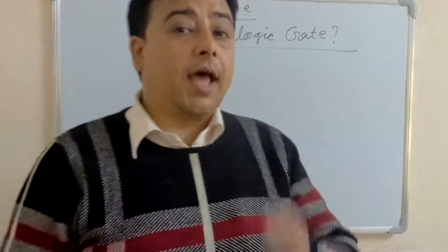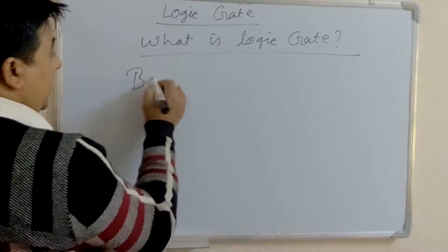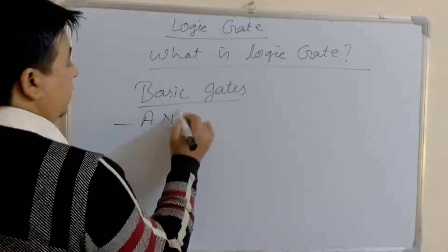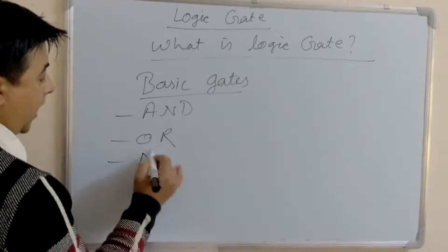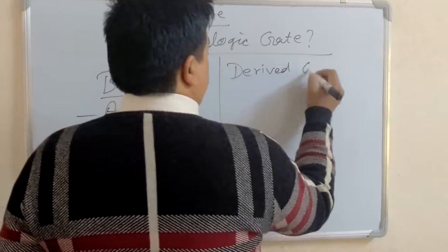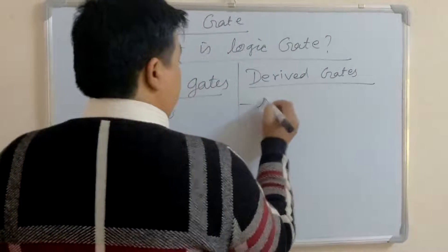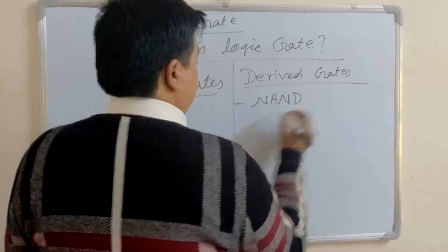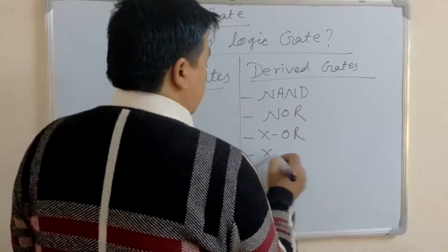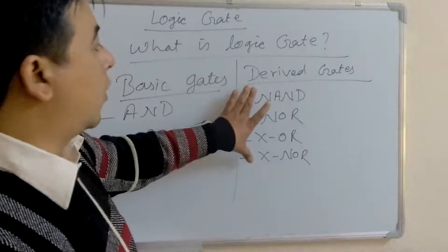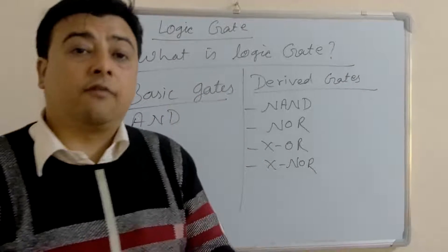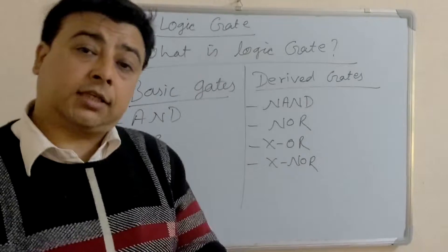In digital computers, there are three basic gates. These three basic gates are AND gate, OR gate, and NOT gate. Apart from these basic gates, there are four derived gates: NAND gate, NOR gate, EXCLUSIVE OR gate, and EXCLUSIVE NOR gate. These four are derived gates, and the three basic gates are also known as fundamental gates.